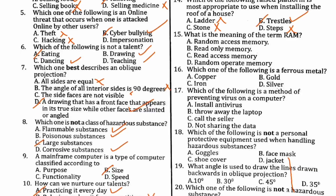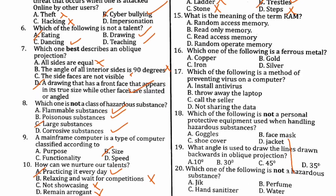Number fifteen: what is the meaning of the term RAM? RAM means Random Access Memory — that is the correct answer. ROM stands for Read Only Memory.